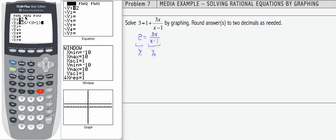So I put the equations into y1 and y2 on the left-hand side. So y1 equals 2, y2 equals 3x divided by the quantity x minus 1. Notice the use of parentheses, extremely, extremely important.